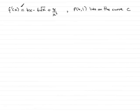Now in this question you're given that f dash x, that's the first differential of f of x, is equal to 4x minus 6 root x plus 8 over x squared. And the point P, which has coordinates (4, 1), lies on the curve C, that is the curve C being y equals f of x. And our job is to find f of x.